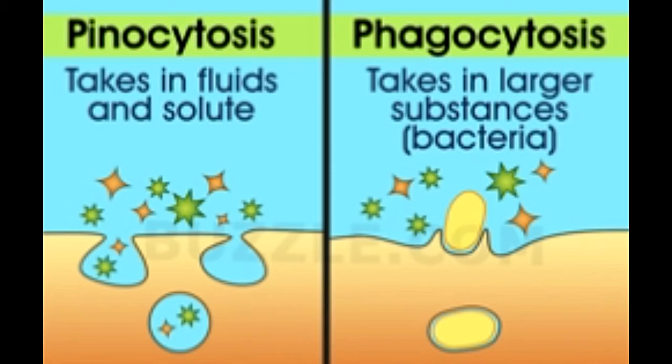This early endosome forms the late endosome, which then forms the lysosome. Endocytosis can be classified into three types: phagocytosis, pinocytosis, and receptor-mediated endocytosis.